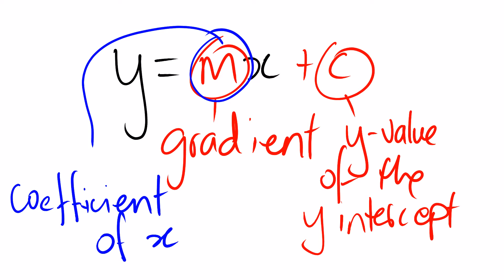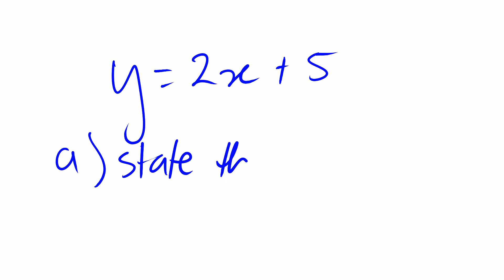For example, if you were given the question y equals 2x plus 5, and the question asked you to state the gradient, you would be able to determine straight away that the gradient of the line is the coefficient of x. So in this case, the coefficient of x is 2. Therefore, we can state that m, which is the variable we give to our gradient, equals 2.